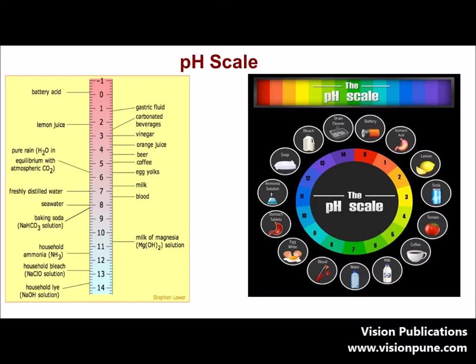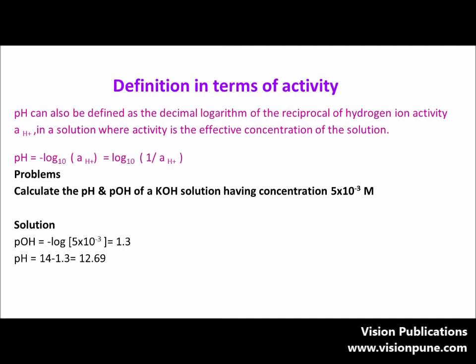We can identify which products are acidic in nature and which are basic or alkaline in nature. We can also define pH in terms of activity. Activity means the effective concentration of the solution — the concentration that actually takes part in the reaction. It is represented by small 'a', and pH equals the negative logarithm of the activity of hydrogen ion concentration to the base 10. So instead of concentration, we use activity. Activity is the actual concentration of the solution.